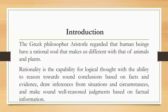The Greek philosopher Aristotle regarded that human beings have a rational soul that makes us different from animals and plants. You should always remember that according to Aristotle, there are three types of soul. Number one is the vegetative soul, which plants and trees have. Number two is the sensitive soul, which allows animals to sense or to feel.